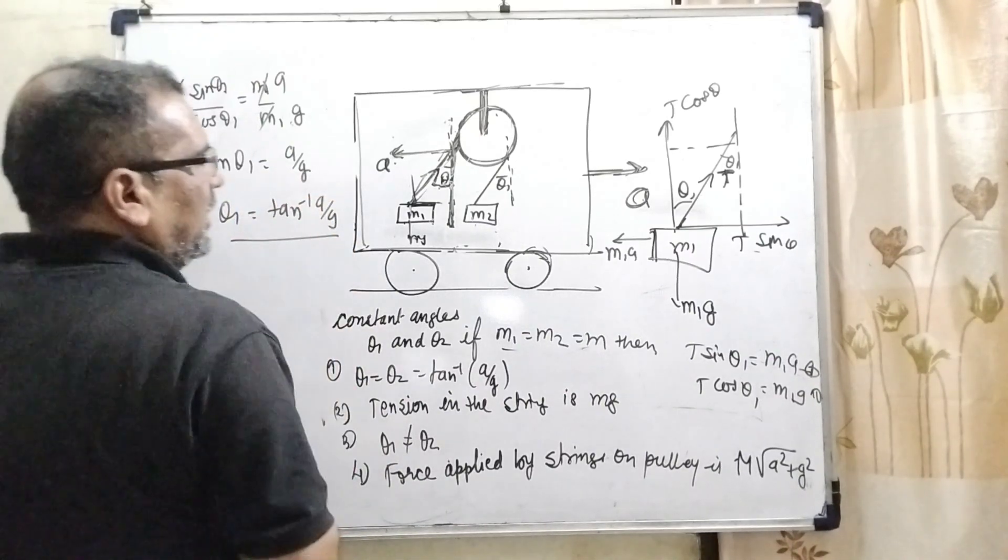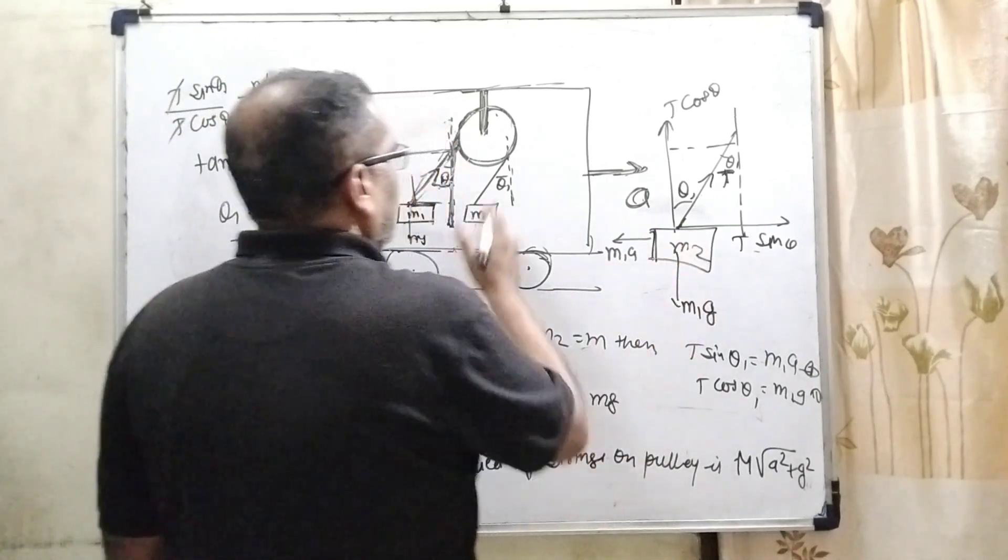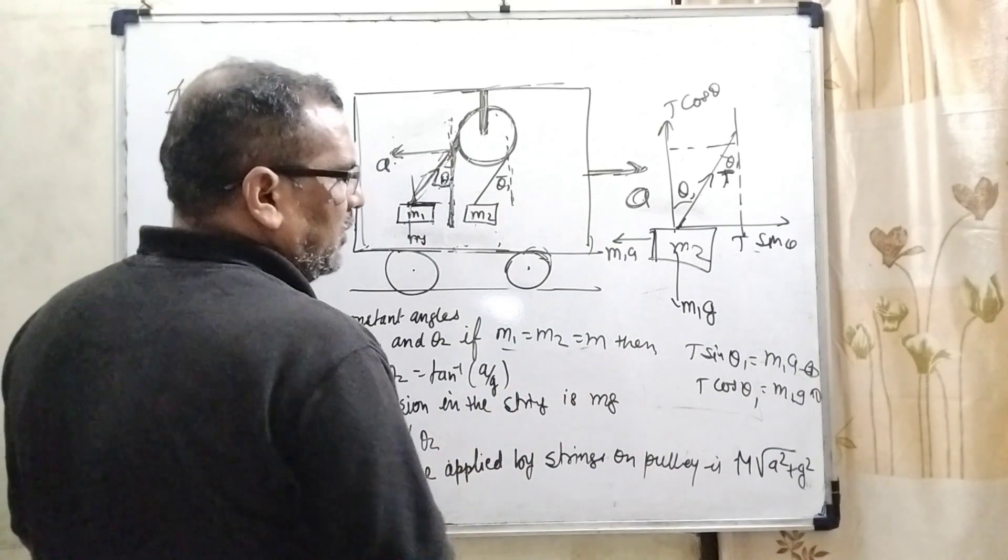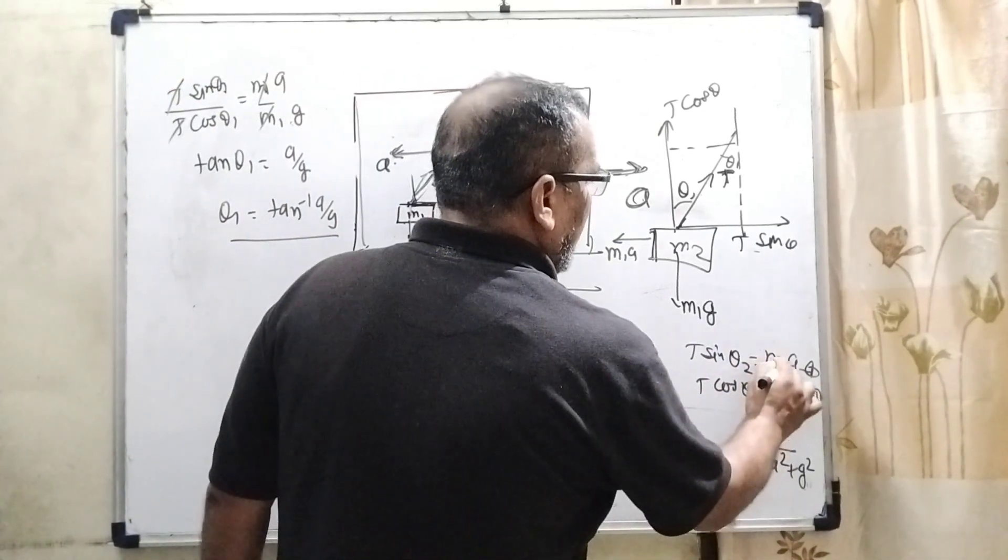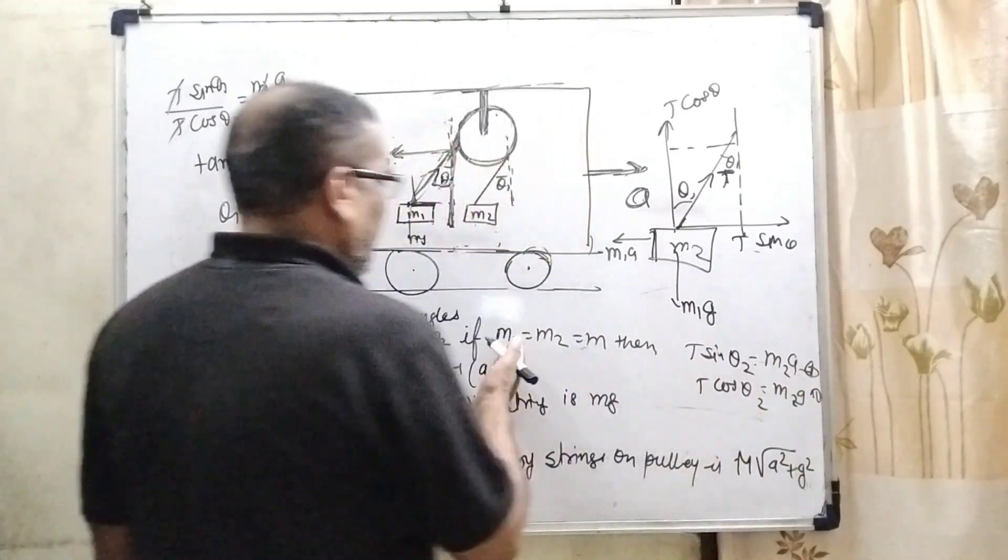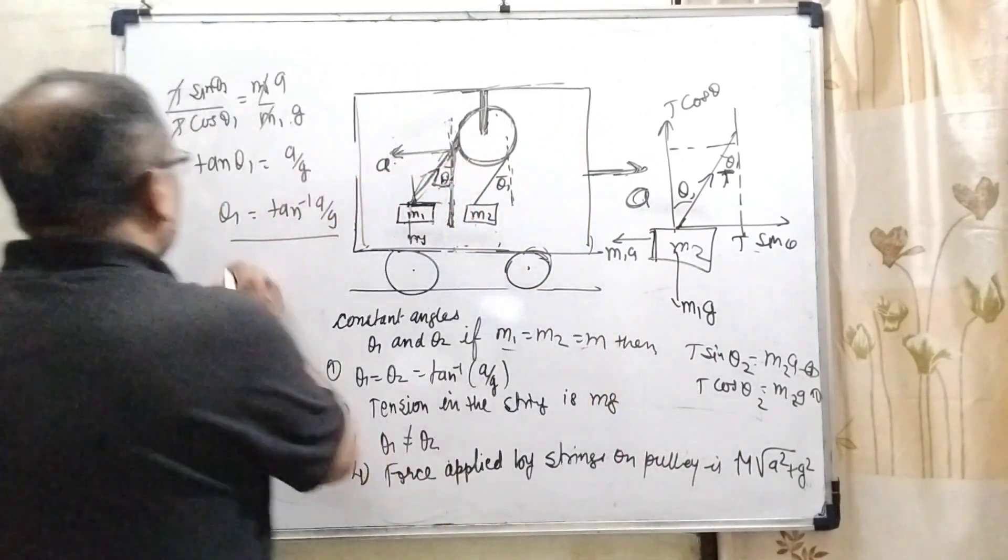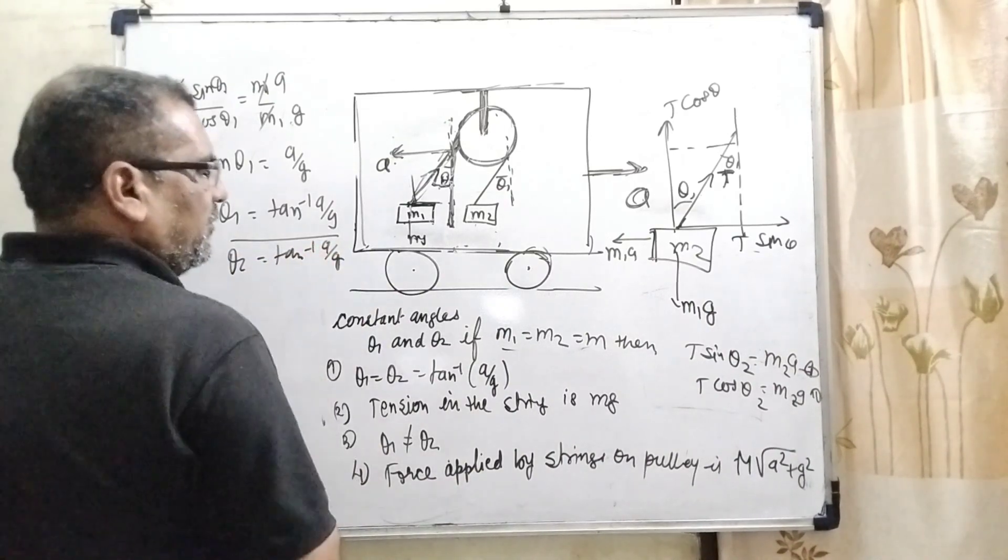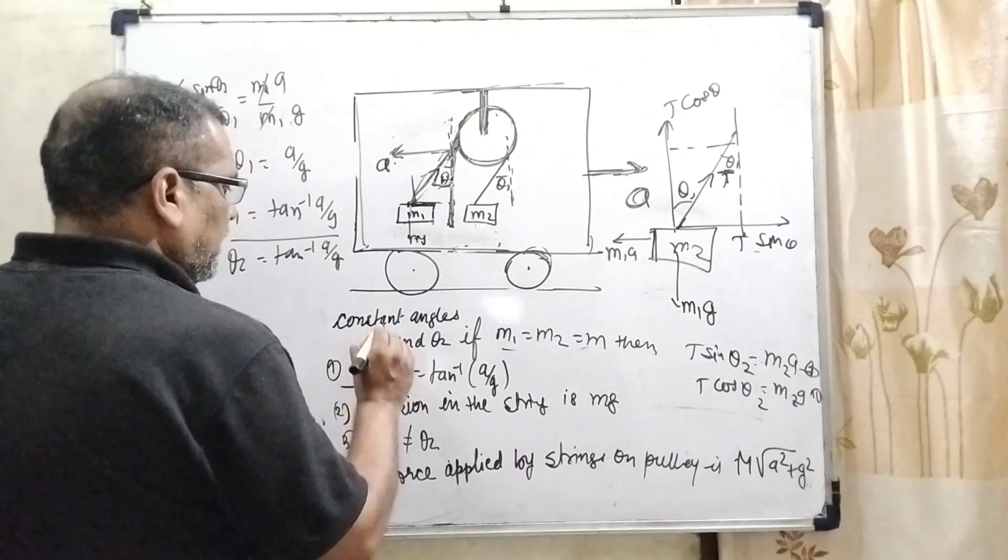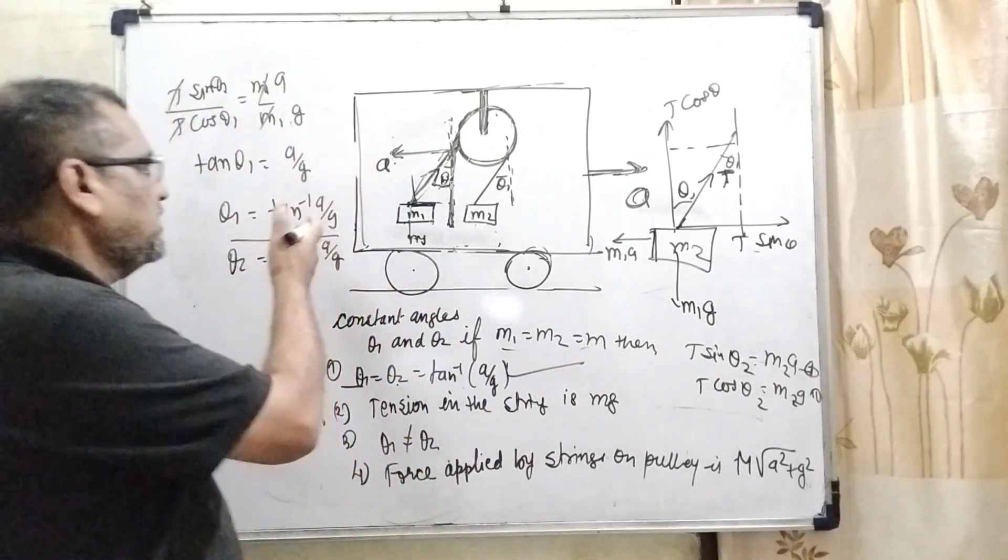And the same thing we apply to m2. There is nothing changed. We can find out here everything is the same, only mass is different, but m1 and m2 are equal to m. Therefore tan theta2 also equals tan inverse a by g. So first option, theta1 equal to theta2 equal to tan inverse a by g, is correct.